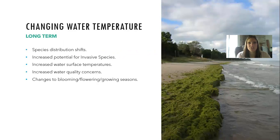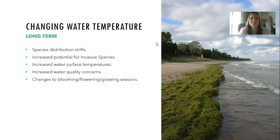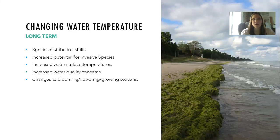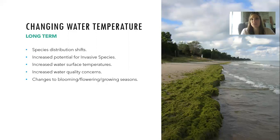Why should we really be concerned about changing water temperature? For the long term, this can influence species distributions. A lot of fish require certain water temperatures for their eggs to stay viable, so they might have to move to different places. Different plants will start thriving, including invasive species. Increased water surface temperatures can increase water quality concerns — E. coli, algae blooms. So it has wide-ranging effects on both humans and wildlife.